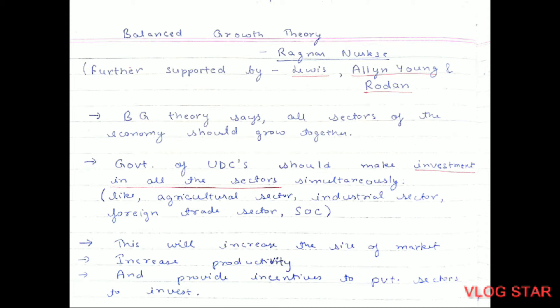Balanced growth theory was given by Ragnar Nurkse and further supported by Lewis, Allen Young, and Rodan. The theory says all sectors of the economy should grow together. Government of underdeveloped countries should make investment in all sectors simultaneously — agricultural sector, industrial sector, foreign trade sectors, and SOC, i.e., social overhead capital. This will increase the size of the market, increase productivity, and provide incentives to private sectors to invest.